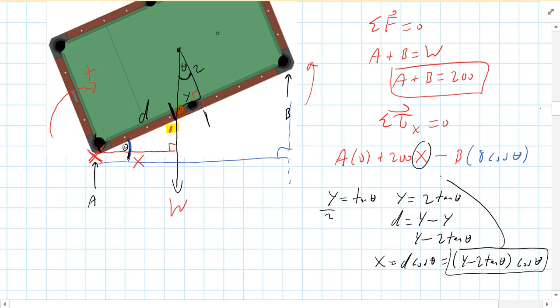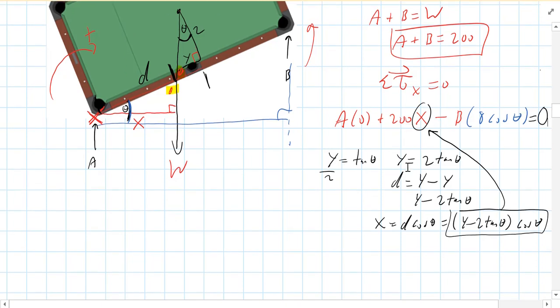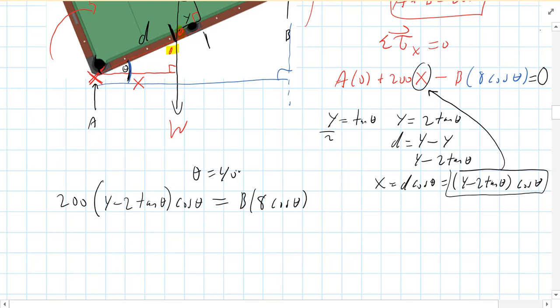So that's our perpendicular lever arm right there. Now, again, if you wanted, you could figure out how much of the weight is perpendicular to the pool table, that radius there, which actually I don't think would be that hard here. But I want to have practice with perpendicular lever arm, so I did a little geometry to find that perpendicular lever arm right there. So that's going to go right here. And then everything else I know, the only thing, this all has to equal zero, right? Net torque has got to be zero. So I have every value in here except for B. So A times zero is zero. We have 200 times this X thing, which is four minus two tangent theta times cosine of theta. And then that has to equal B times eight cosine of theta.